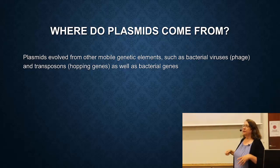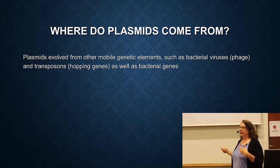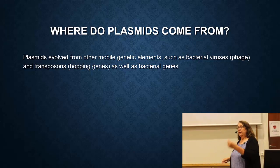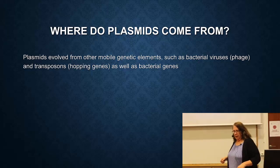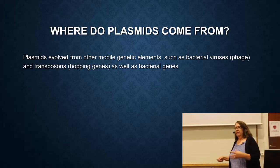Plasmids evolve from other types of mobile elements - there are genes from bacterial viruses and transposons. Transposons are hopping genes, genes that can hop around, as well as bacterial genes. I'm talking about plasmids so much because this is actually the major way in which antibiotic resistance spreads, through a mechanism called conjugation.